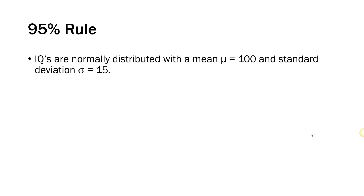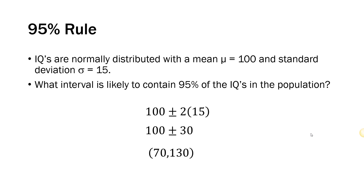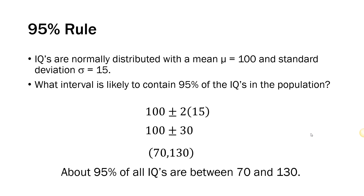One way we can use this: if we know the mean and standard deviation of a distribution, we can figure out an interval where we expect 95% of the values to be. For example, IQs are normally distributed with a mean of 100 and a standard deviation of 15. To find an interval containing the middle 95% of IQs, I take the mean of 100 and add and subtract two times 15, which is 30. So 100 minus 30 and 100 plus 30 gives us 70 to 130. About 95% of all IQs are between 70 and 130.